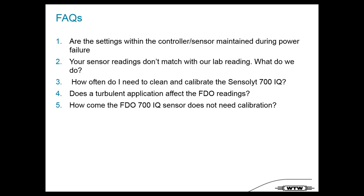Does turbulence affect the FDO sensor? The main application for FDO is an aeration tank — a turbulent environment. The effect of turbulence is more or less zero. Air bubbles may have some influence, but in an aeration tank the effect will be less than 0.1 mg/L, which is very hard to detect. Don't worry about turbulence or air bubbles. How does the FDO 700 IQ not need calibration? It is a summary of the complete design — a combination of all design choices — that makes it completely calibration-free.